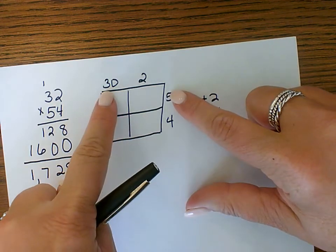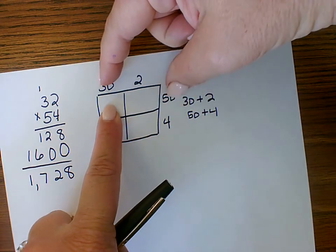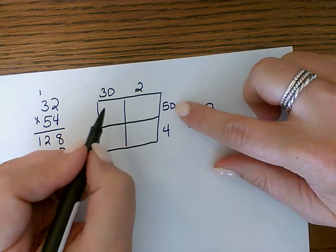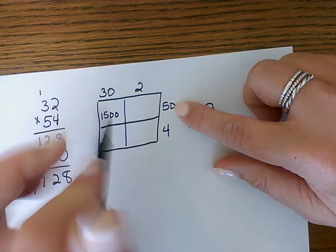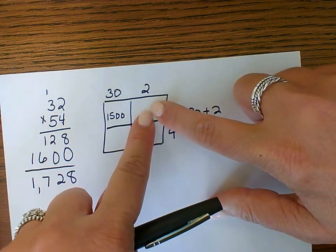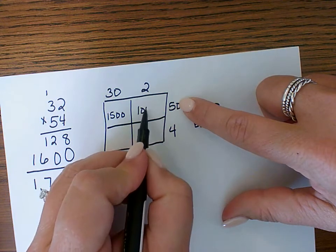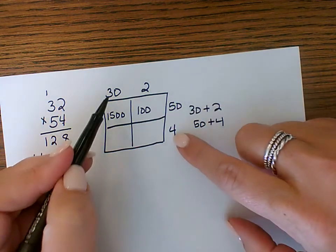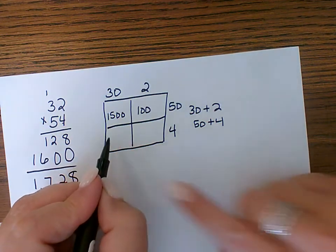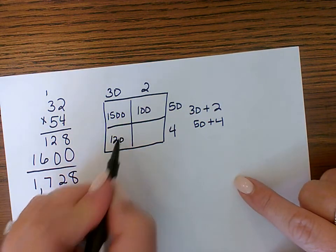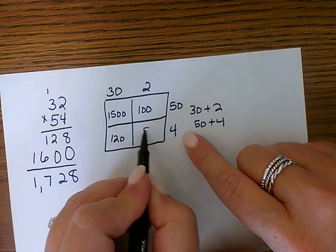Then all you do is kind of cross-reference, come into each other. In this box, you're going to do 30 times 50. 3 times 5 is 15 and add the 2 zeros. In this box, you'll have the product of 2 times 50. 2 times 50 is 10 and then add on 1 zero. In this box, you'll have the product of 30 times 4. 3 times 4 is 12 and then add on 1 zero. And in this box, you'll have 2 times 4, which is 8.